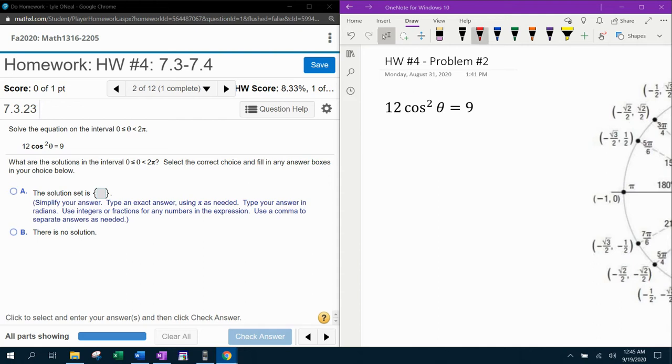So our ultimate goal here is to isolate the trig function. Our first step is going to be to divide both sides by 12. We have to get rid of the lead coefficient in order to isolate the trig function. So we're going to have cosine squared theta equals 9 twelfths. We do need to reduce that to lowest terms, so that'll reduce to three fourths.